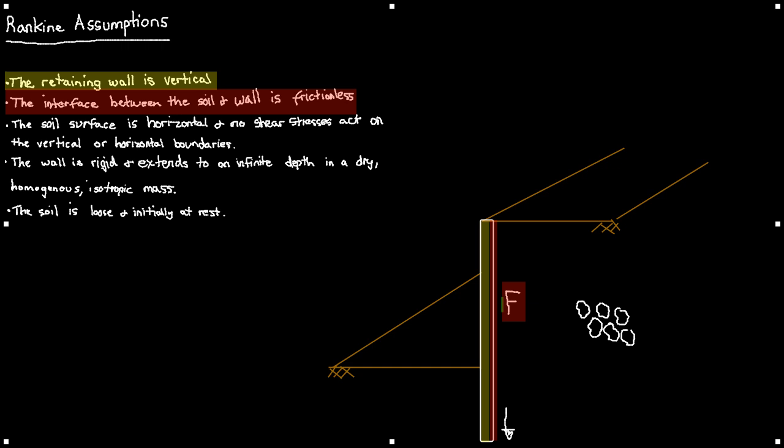Then, say what I see. The soil surface is horizontal. I can see that from my diagram that I have drawn and then that helps me go on to say that no shear stresses act on the horizontal and vertical boundaries.